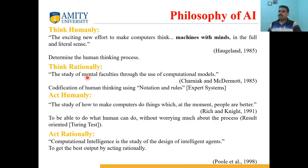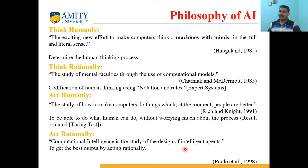An expert system is an example of 'Think rationally.' The 'Act humanly' philosophy says that a machine's output should be similar to human output, ignoring the internal process of the machine. 'Act rationally' is the study and design of intelligent agents to get the best output by acting rationally — the machine should generate the best output possible given the available inputs.